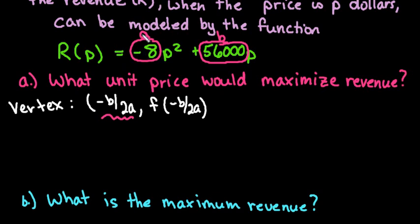We know that this is a maximum because the negative leading coefficient tells us that our graph opens downward. So for the first question A all we're going to do is plug it into the negative B over 2A formula.